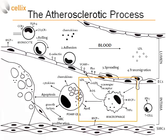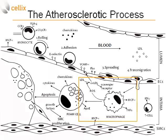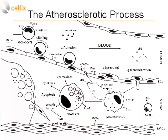Following transmigration, monocytes will turn into macrophages under the influence of oxidized LDL binding to scavenger receptors, which leads to transformation of macrophages into foam cells and formation of the necrotic lipid core. This further forms fatty streaks and is recognized as a progression of atherosclerosis.